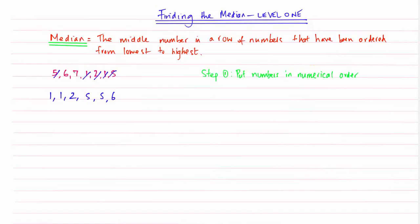And I have got my 6, I am going to strike that one off. And then I have got my 7, I am going to strike that one off. So here are my numbers now written in order from the smallest to the biggest. All that is left now is that I need to find my middle number.